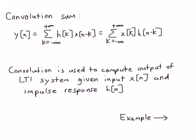As I hope you remember from class, convolution is used to compute the output of an LTI system given the input x of n and the system impulse response h of n. It's really important to emphasize that the system has to be linear and time-invariant in order to use the convolution sum. So if the system is not LTI, you can't use convolution.